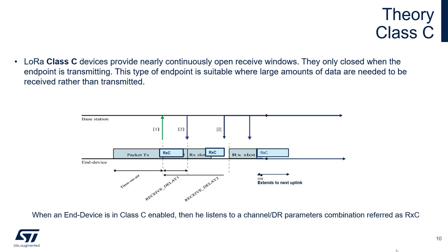Class C is a classic mode of operation: we transmit data and then immediately switch the receiver on, because this is half duplex. It is for grid-operated devices. We need a lot of energy because of the continuous operation of the transceiver.